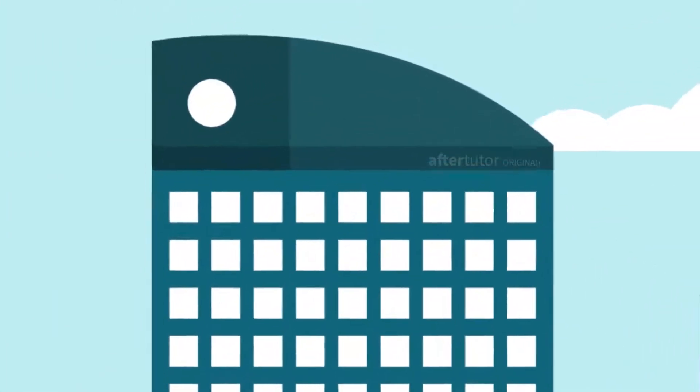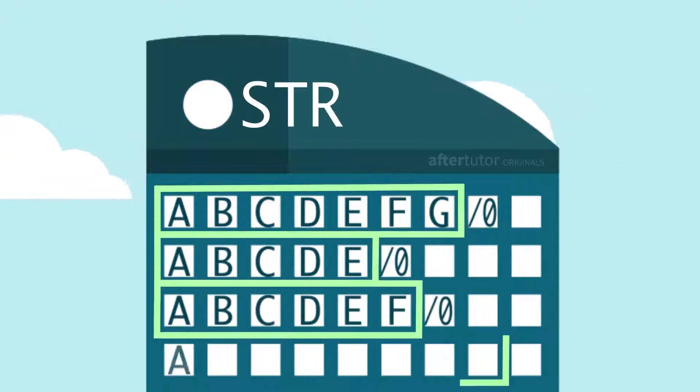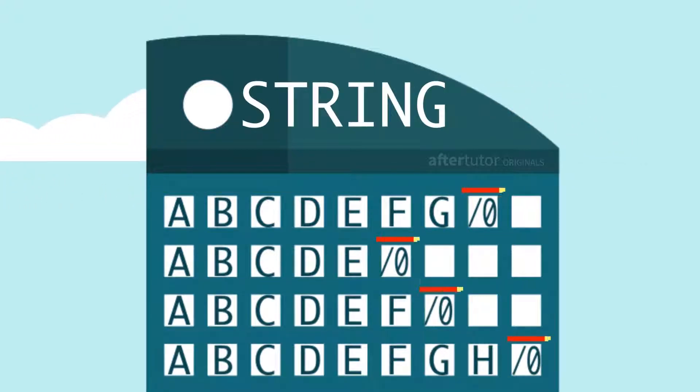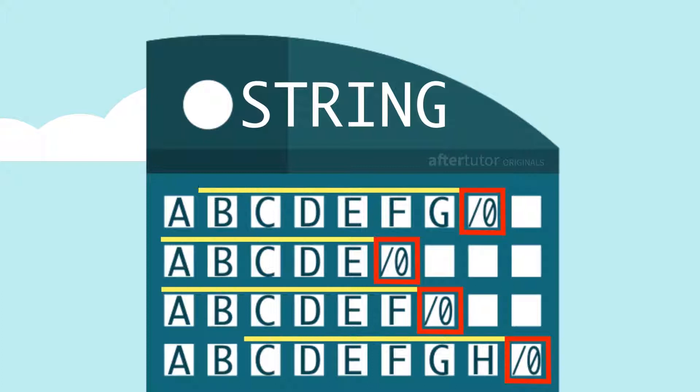In the C programming language, an array of characters is called a string. A terminating null character determines the length of a string.